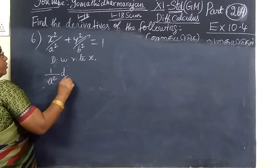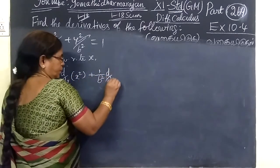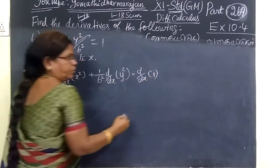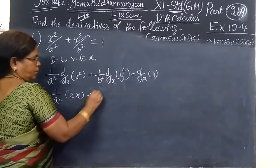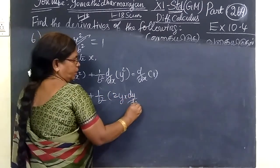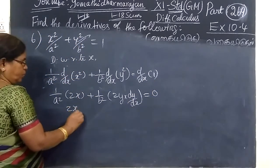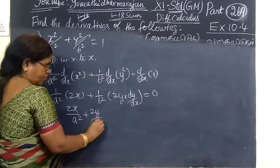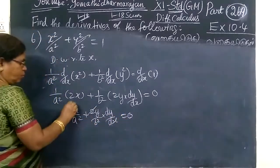d by dx of x square plus 1 by b square, then d by dx of y square equal to d by dx of 1. It is a constant, so 1 by x square — then our differentiation is 2x. Then 1 by b square dy — we get dy by dx. Differentiation of constant is 0.